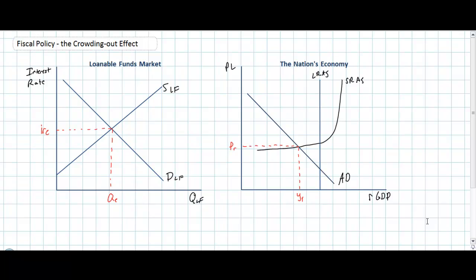In today's video lesson we're going to be talking about what is known as the crowding out effect of deficit finance fiscal policy. In previous lessons we studied two other effects of fiscal policies known as the tax multiplier and the spending multiplier. In those lessons we learned how a particular increase in government spending or decrease in taxes can lead to a proportionally larger increase in aggregate demand and total output through the multiplier effect.